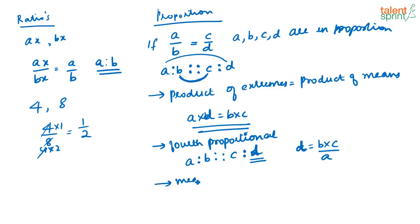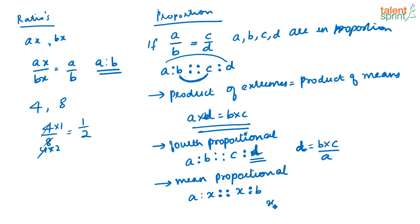Next is mean proportional. If you have two ratios like a is to x as x is to b, then x is called the mean proportional or second proportional. We can say x squared equals a·b, or x equals the square root of a·b. So that is the mean proportional of the numbers a and b.